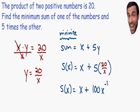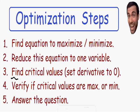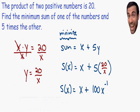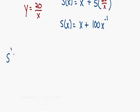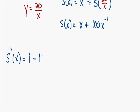Step number three says to find the critical values. To do this we take the derivative and set it equal to zero. The derivative of s(x) is equal to the derivative of x, which is 1, plus the derivative of 100x⁻¹. Multiplying the exponent −1 by 100 gives −100, and decreasing the exponent by one gives x⁻². So s'(x) = 1 − 100x⁻², and we set this equal to zero to find our critical values.